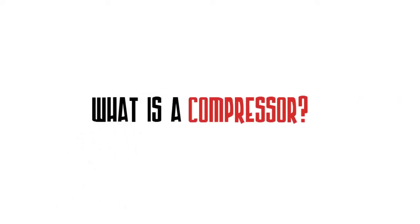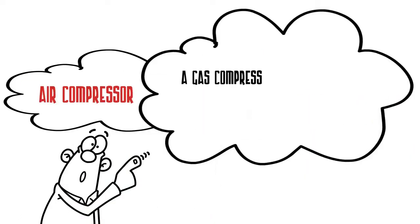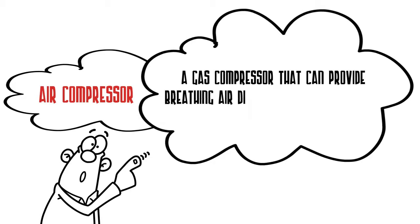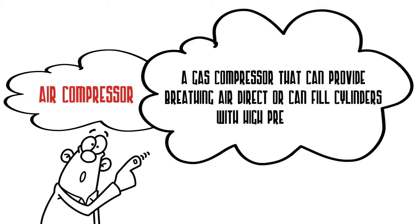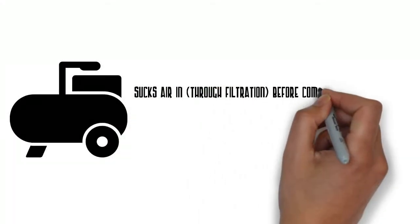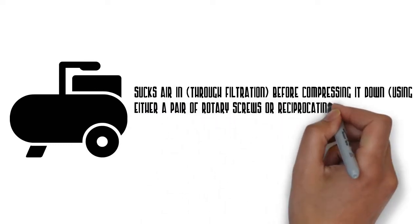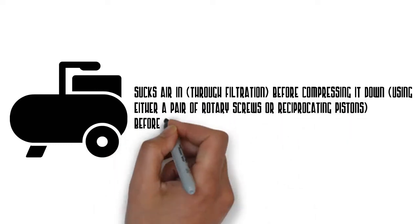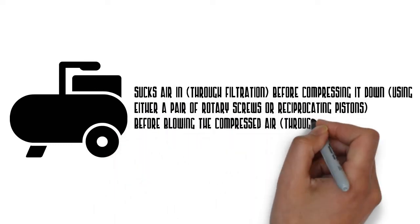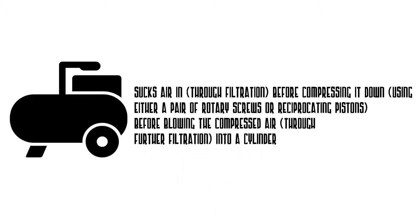What is a compressor? An air compressor is a gas compressor that can provide breathing air directly or can fill cylinders with high-pressure gas. The compressor sucks air in through filtration before compressing it down using either a pair of rotary screws or reciprocating pistons, before blowing the compressed air through further filtration into a cylinder.